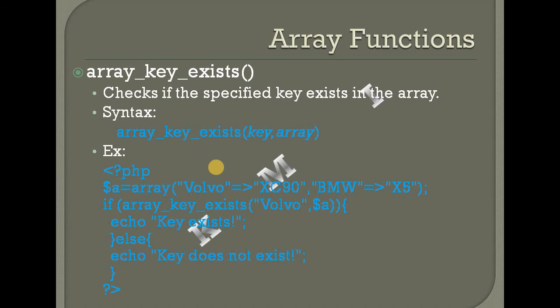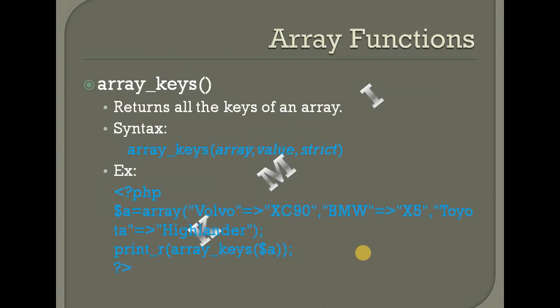Array_key_exists — checks if the specified key exists in the array. In an array, a particular key is checked. For example, array with Volvo XC90 and BMW X5.